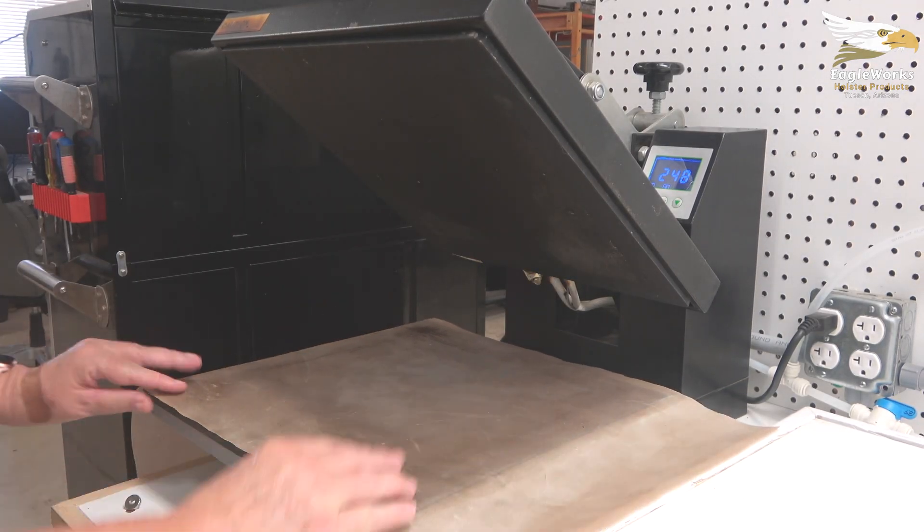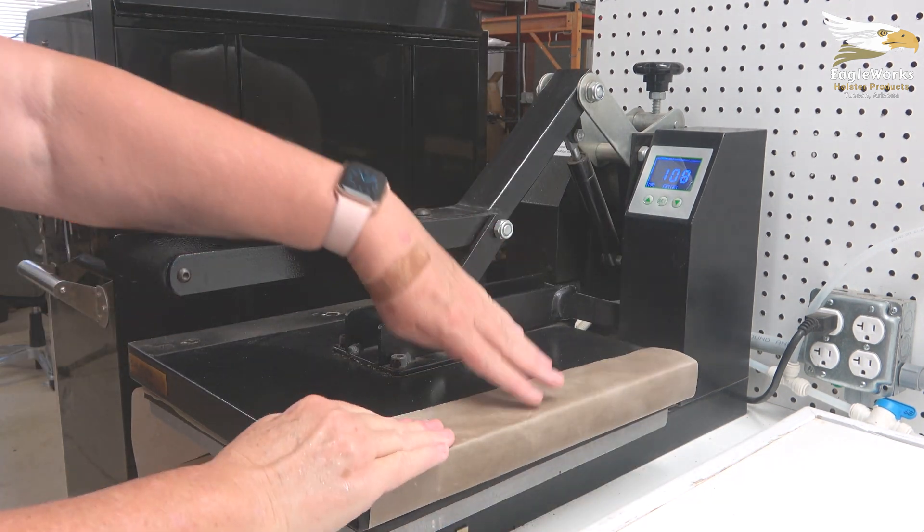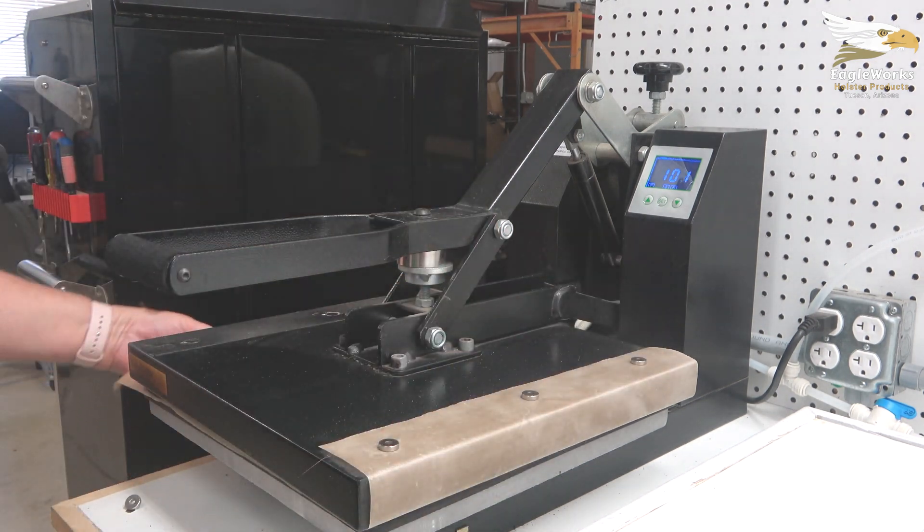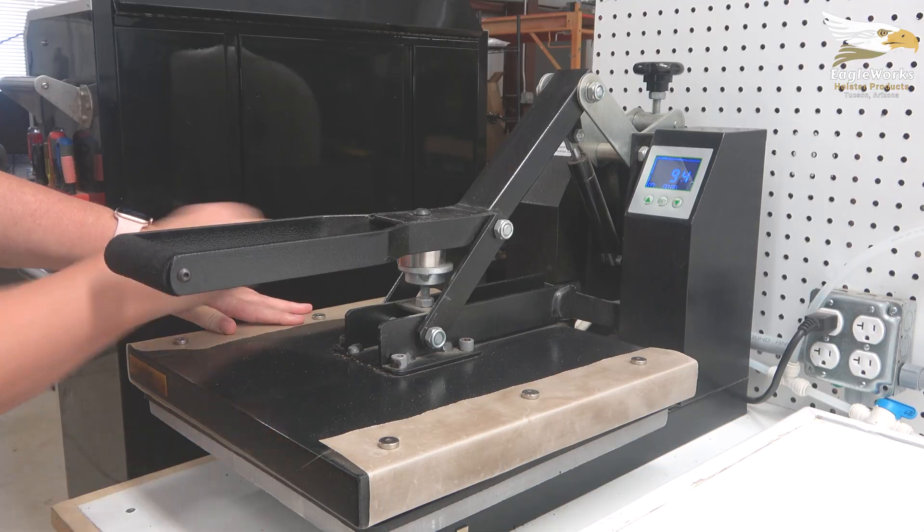If you do use a t-shirt press you'll want to cover the heating plate with a teflon sheet to keep the kydex from sticking to it. Here we use some small magnets to hold the teflon sheet in place.